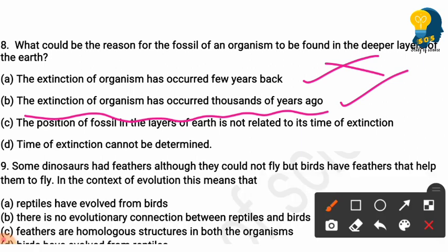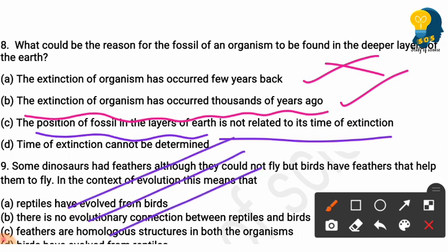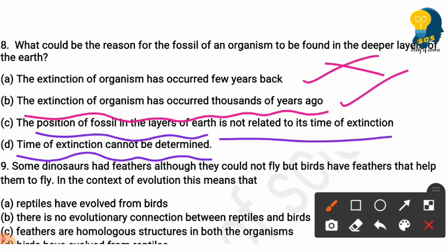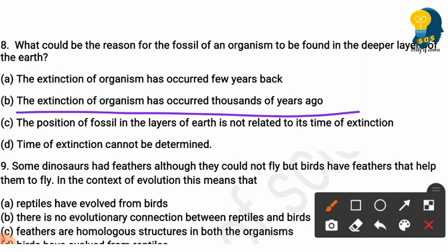Looking at the third option: the position of the fossil in the layers of earth is not related to its time of extinction — this is completely wrong, because it is related to time. The fourth option: time of extinction cannot be determined — also wrong. The correct answer is option B. The hint is in the question itself, so understanding the question well is a technique to get the right answer.